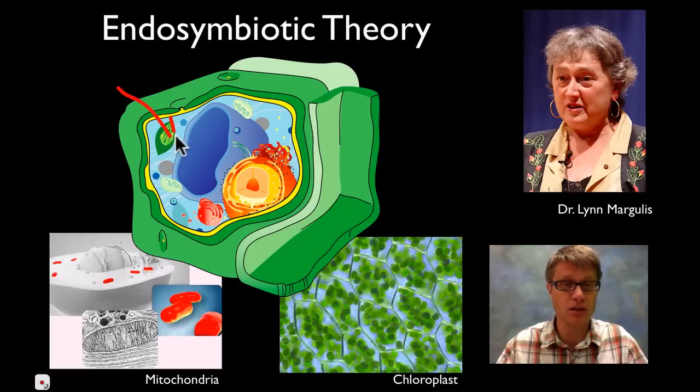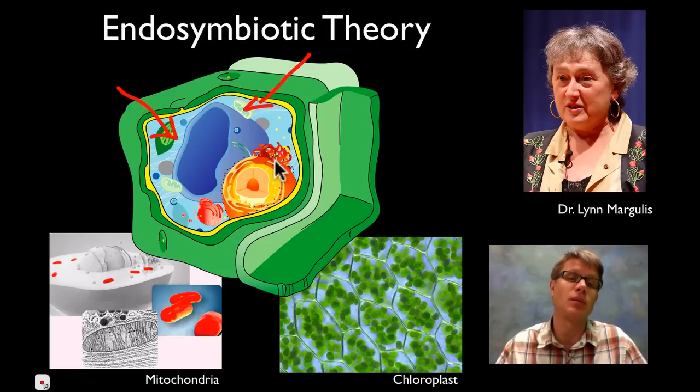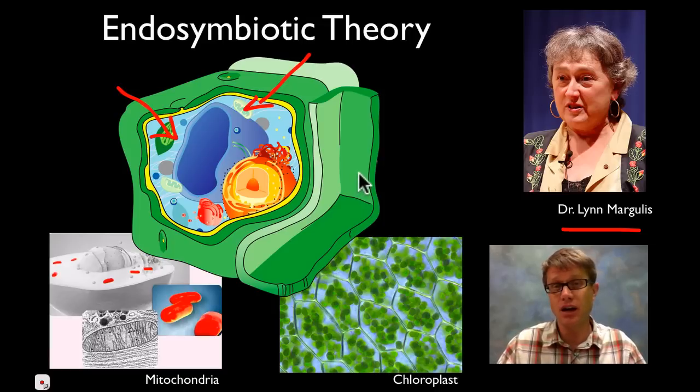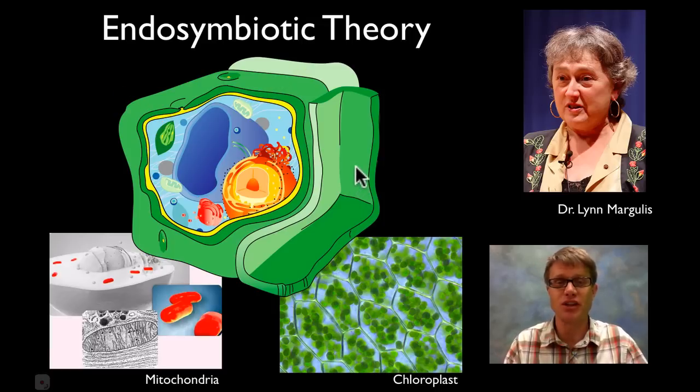Basically, cells became more complex by grabbing two things: I would point to the chloroplast of the plant cell and also to the mitochondria. They became more complex that way. One of my favorite quotes of Lynn Margulis is that cells became more complex not through combat or fighting each other, but through networking, through cooperation.